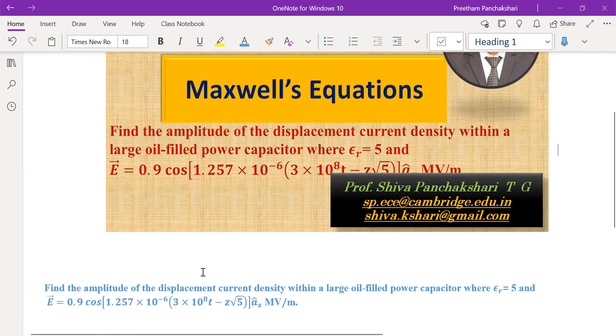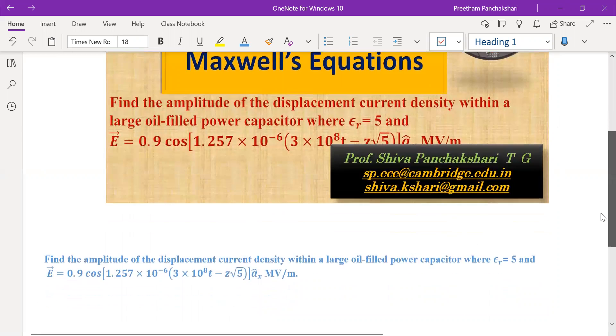We have to find the amplitude of the displacement current density between some device, which is having relative permittivity of 5 and an electric field E given by this equation. So E is given, we have to find displacement current density.